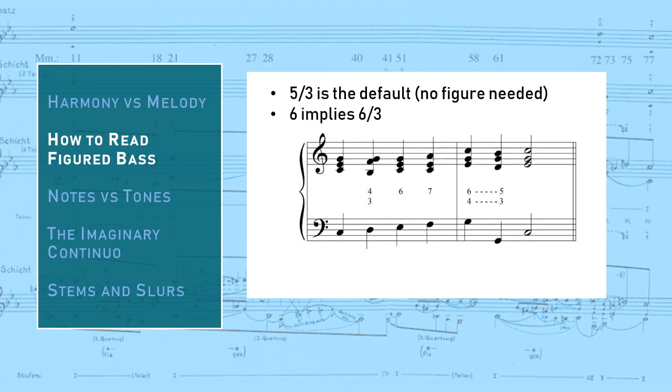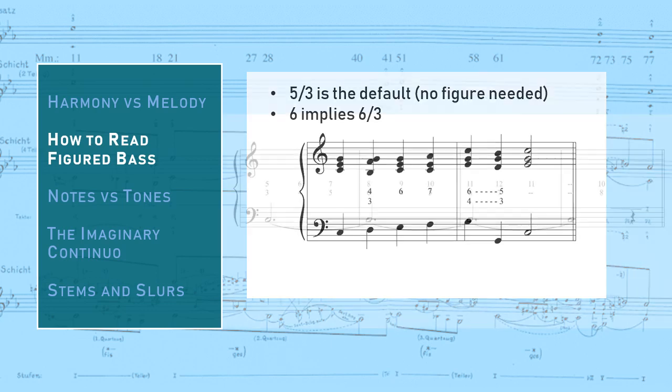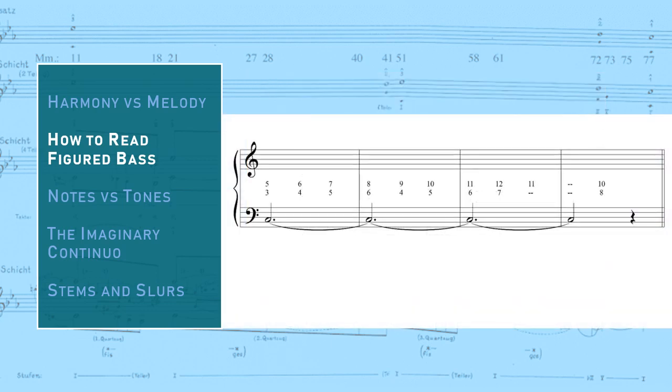Another shorthand is to simply write 6 whenever a 6-3 is indicated. A third above the bass is assumed, and you would need a figure to indicate the slightly less common 6-4 or 6-5 chords. Here is an example of a figured bass over a tonic pedal point from CPE Bach's Essay on the True Art of Playing Keyboard Instruments that goes well beyond the familiar chord inversion symbols. If you want, you can pause the video and try to come up with how you would realize these figures before I show you Bach's realization.